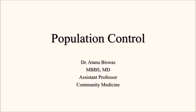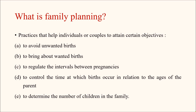The first term is family planning. Family planning refers to practices that help individuals or couples to attain certain objectives. Number one: to avoid unwanted births — if the couple does not want to get pregnant they can decide against the pregnancy. They can also bring about wanted births. They can also regulate the intervals between pregnancies — if there are more than two children they can decide how many years of gap to have between two successive pregnancies.